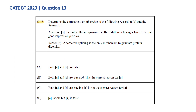Hello all, we are looking at question number 13 from GATE Biotechnology 2023 paper. Determine the correctness or otherwise of the following assertion A and the reason R. The assertion is: in multicellular organisms, cells of different lineages have different gene expression profiles. The reason given is: alternative splicing is the only mechanism to generate protein diversity.